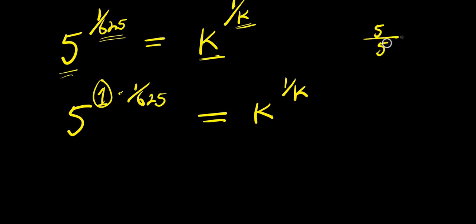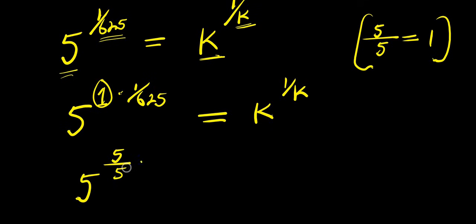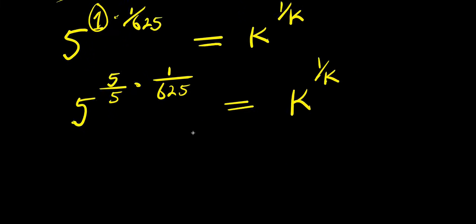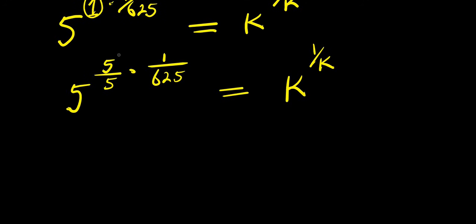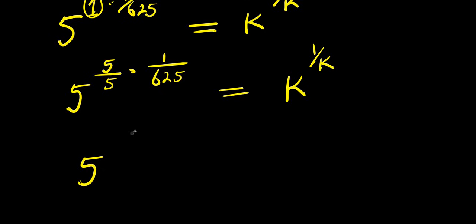So 5 over 5 is the same thing as 1. So I have 5 to the power of 5 over 5 times 1 over (6/5). So 5 over 5 is the same thing as 1. So what I need to do would be to multiply this out. I have 5 to the power of 5 times 1 times 5, divided by 5 times (6/5).